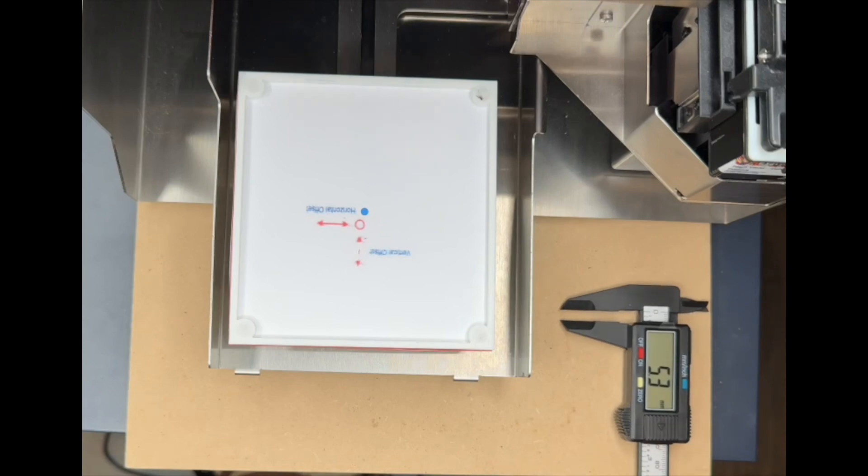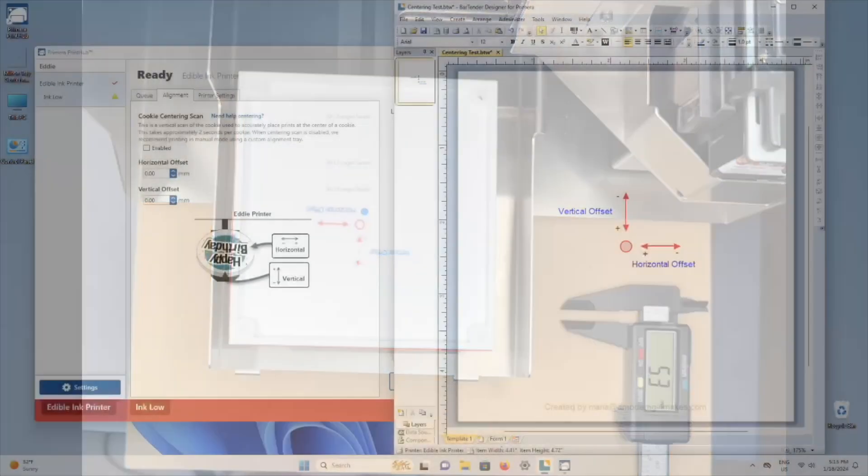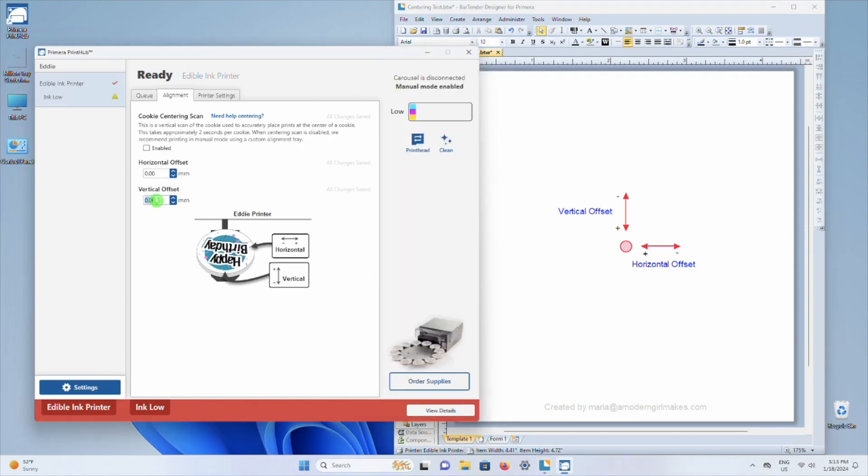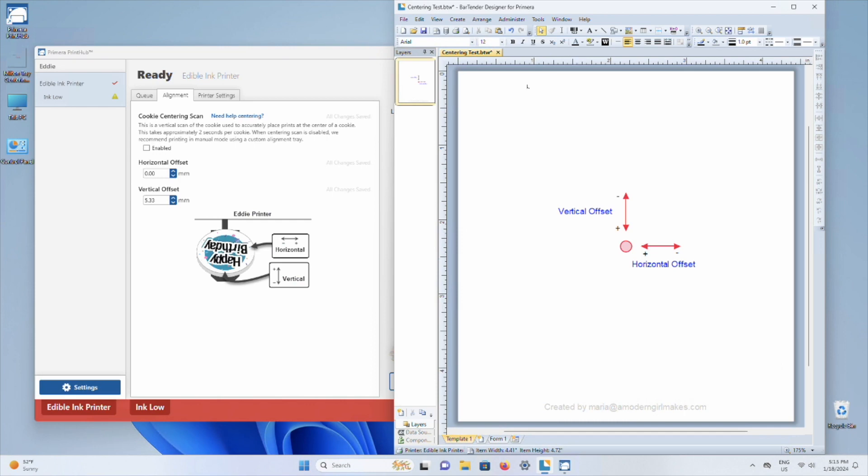And that's 5.3 millimeters. So now I'm going to go and enter that into the software. And that was the vertical offset, and we said 5.3. That looks good. Everything's been saved. So now I'm going to move back over to the Bartender template, Control-P for print, test print.